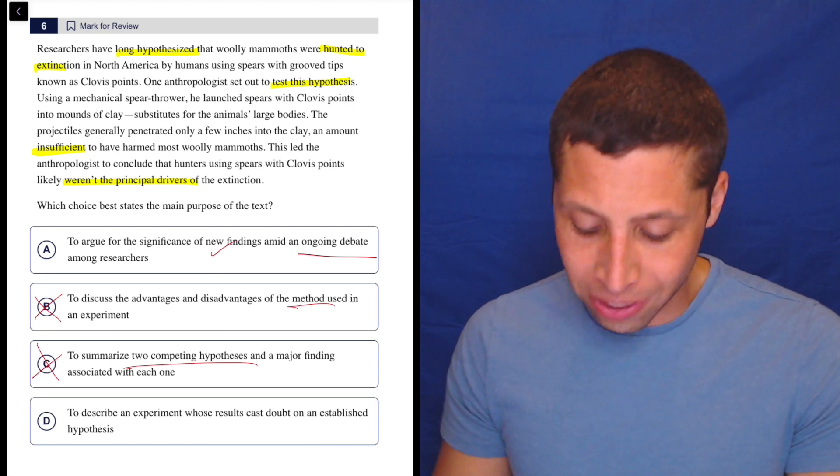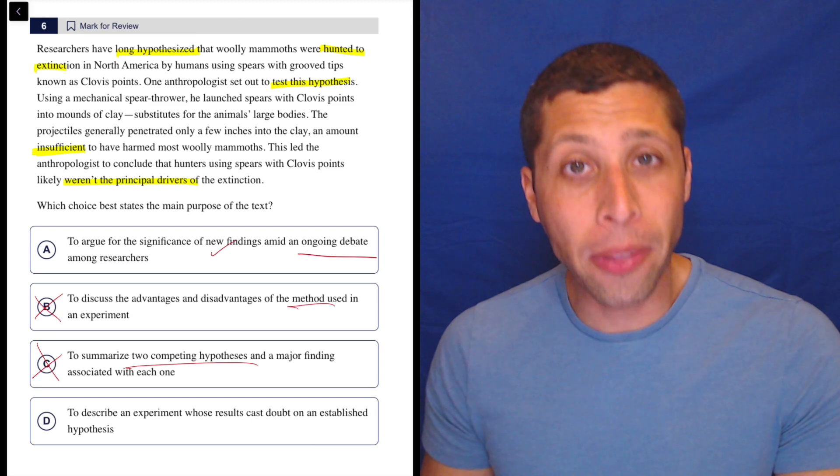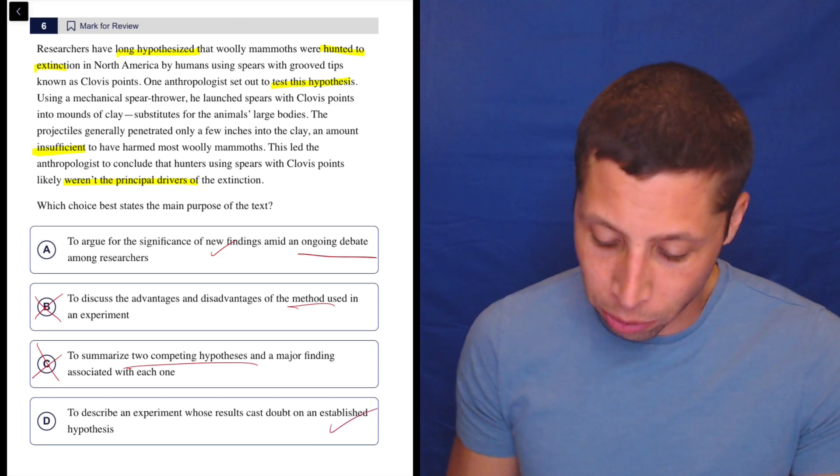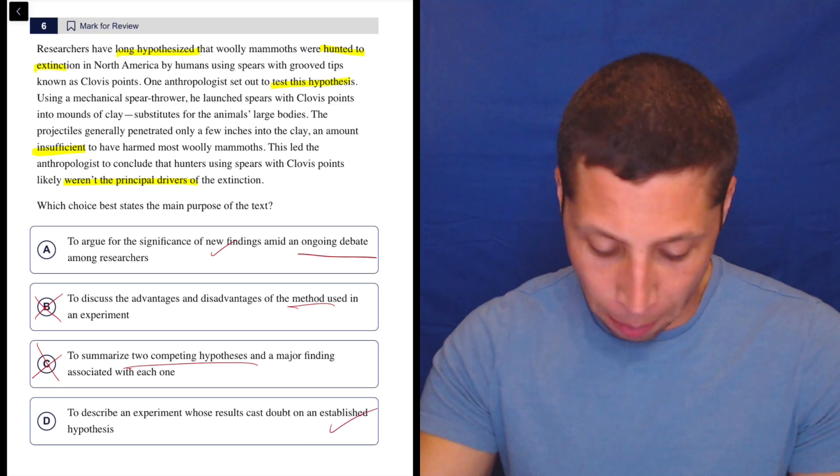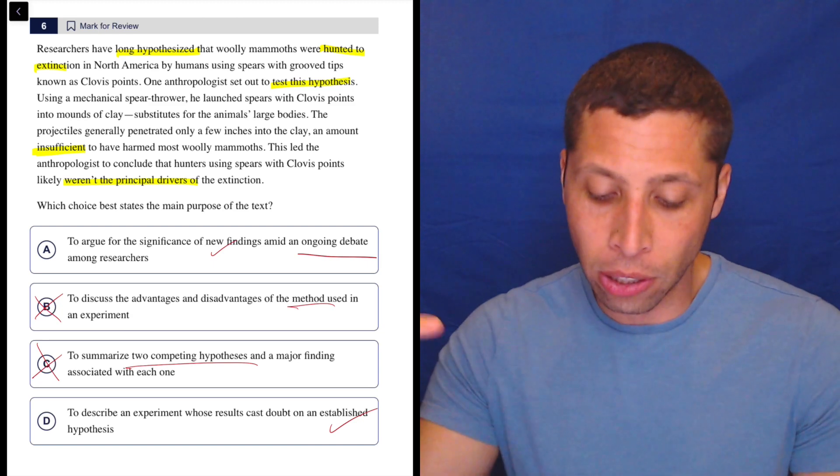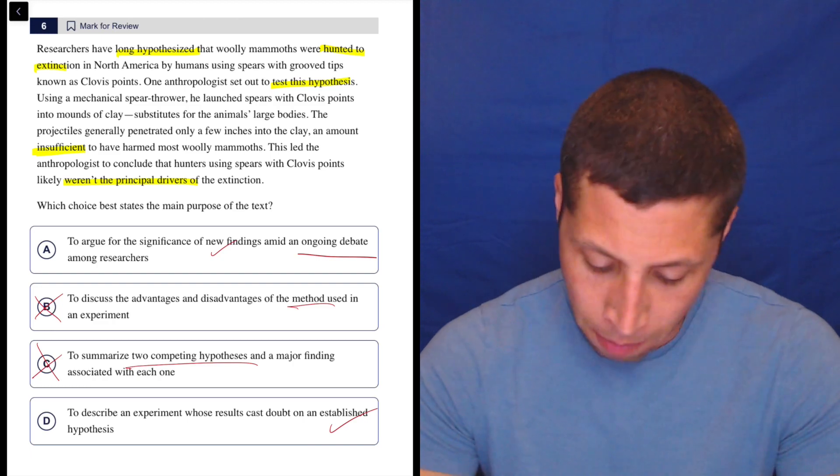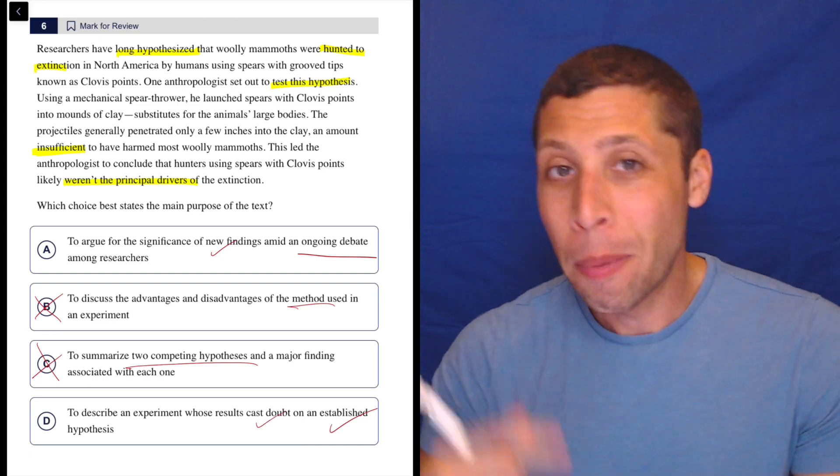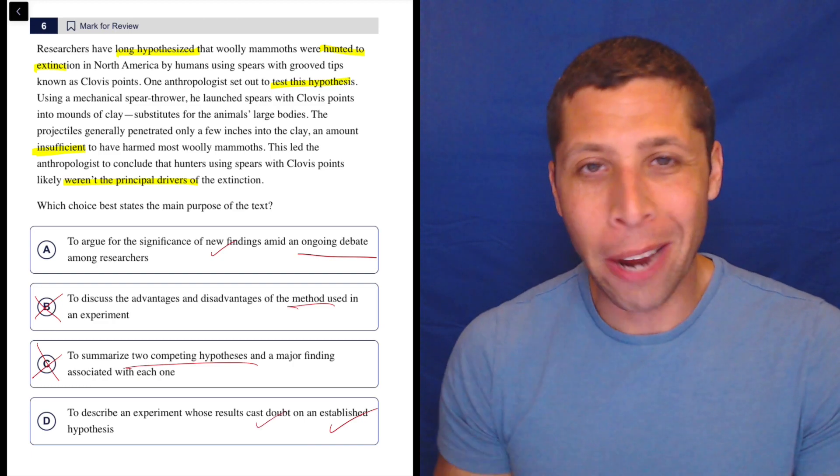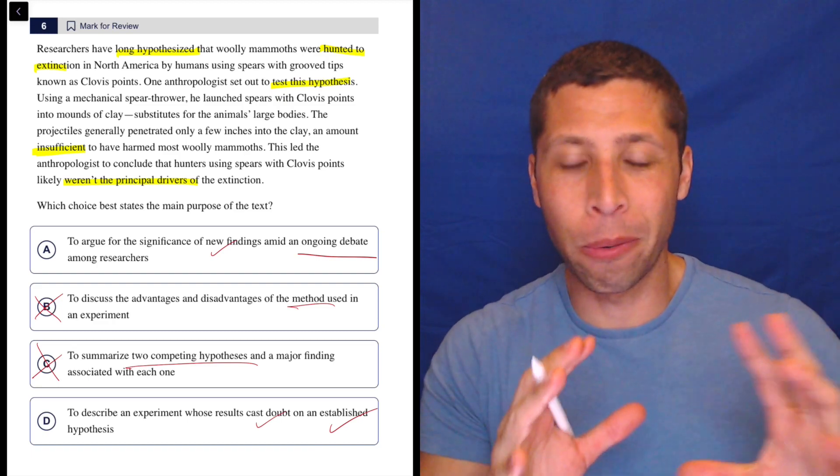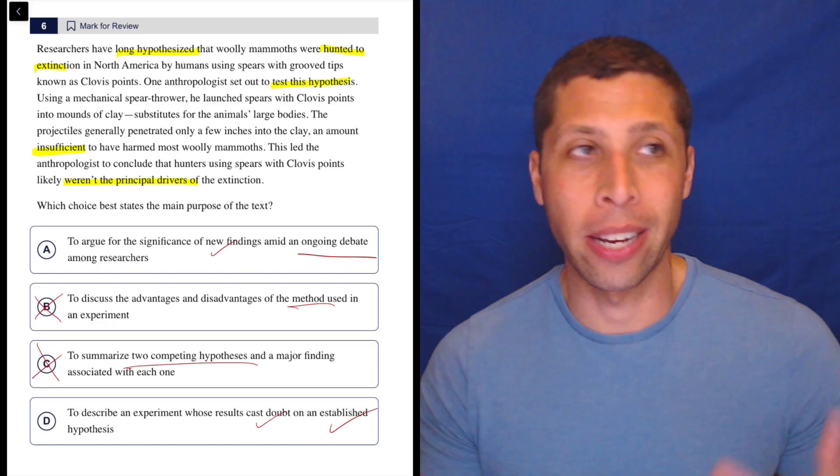So let's look at D. To describe an experiment whose results cast doubt on an established hypothesis. And this is what I've been saying as I've disproved the other choices. It's definitely an established hypothesis. They say it has long been hypothesized right at the beginning. So established means it's been around for a long time. And now we do have some doubt. But notice we're not talking about debate. We're not talking about this big like, oh, now we completely think the opposite.